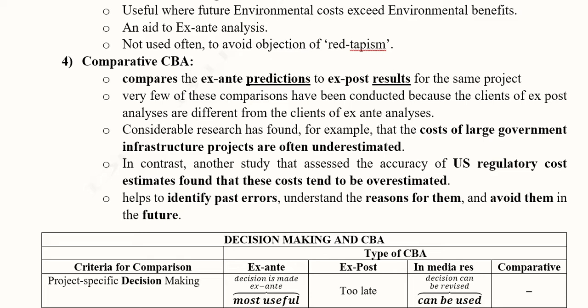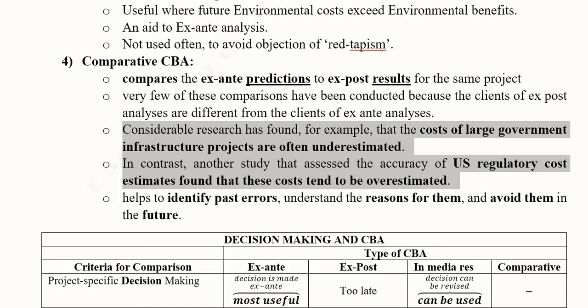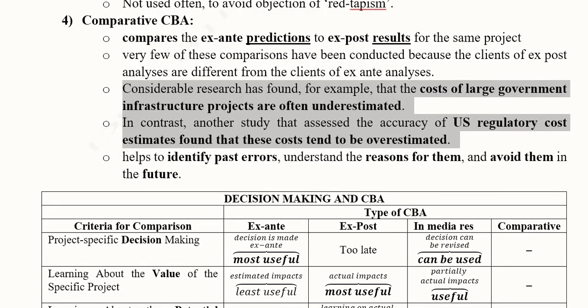Evidence from comparative CBA is mixed. For large government infrastructure projects, costs are often underestimated — expected given their magnitude and complexity. In other cases, such as U.S. regulatory cost estimates, costs have been found to be overestimated. Comparative CBA helps us identify whether underestimation or overestimation has occurred, highlight past errors, understand their reasons, and avoid them in future projects.